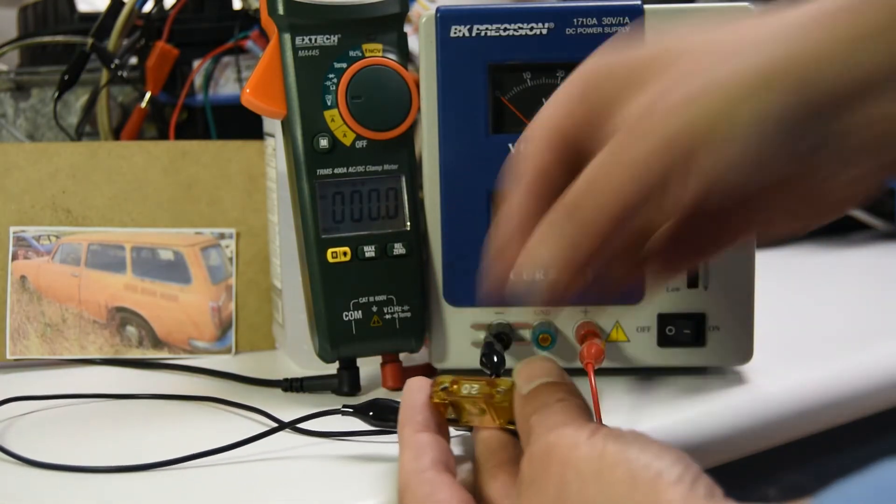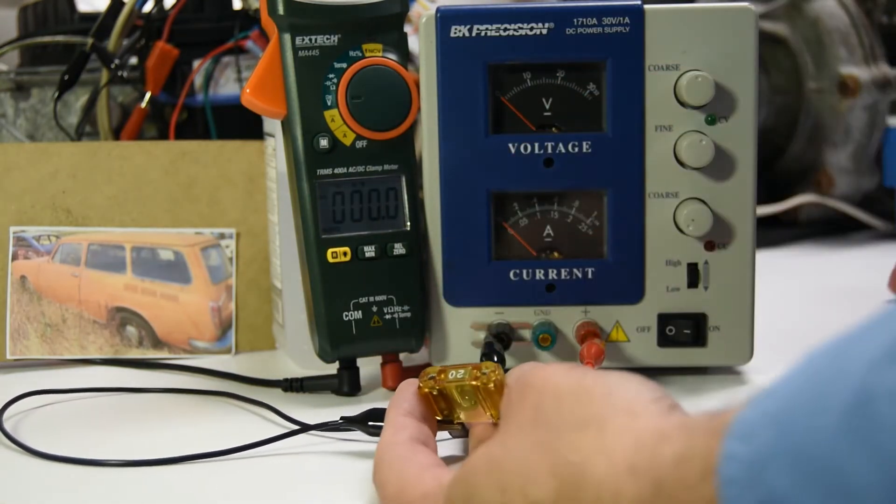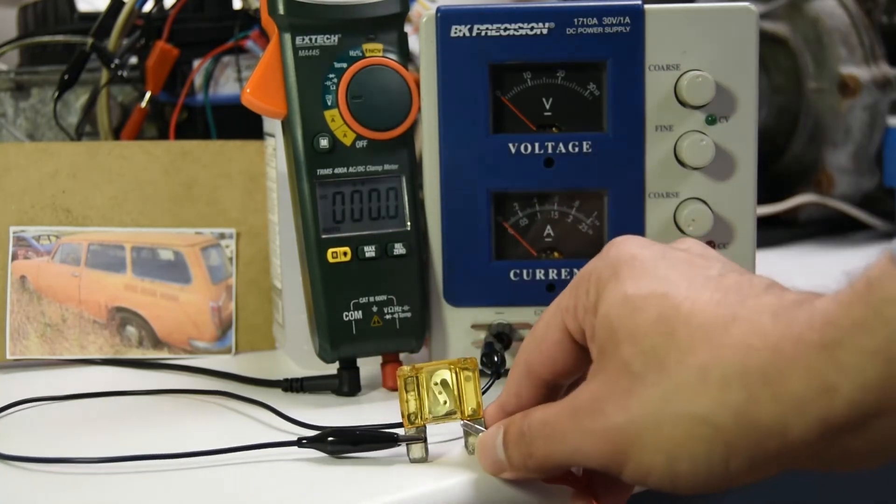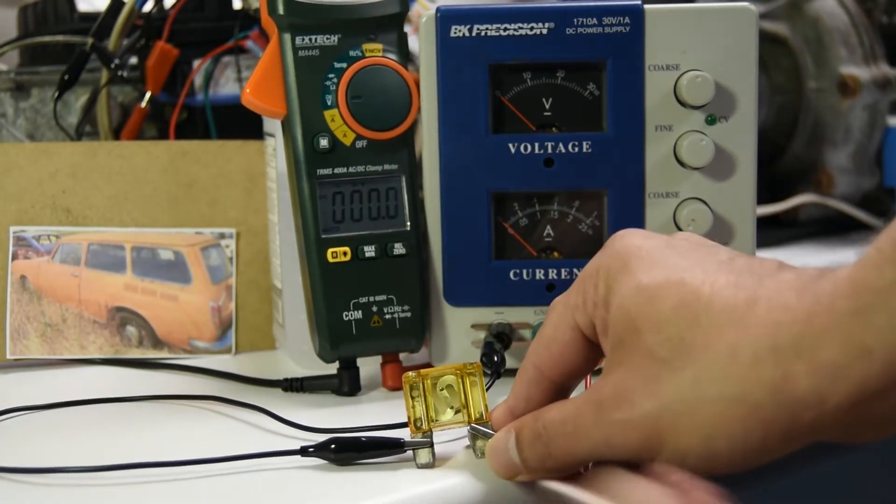there's going to be a voltage drop across these two metal terminals right here. Every fuse, even the little ones, has metal terminals, and if you want to get fancy, you can even do this on older style glass fuses.